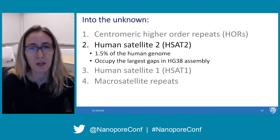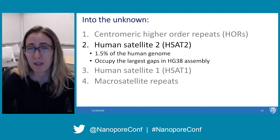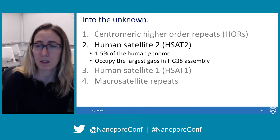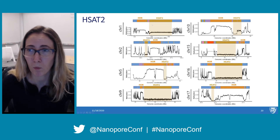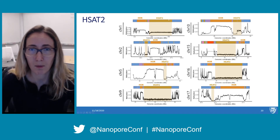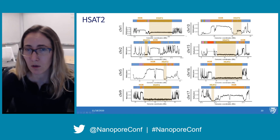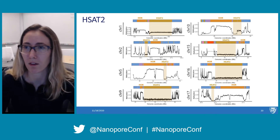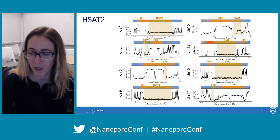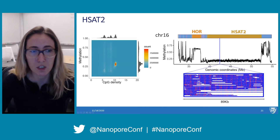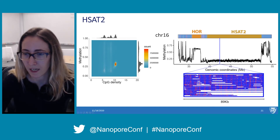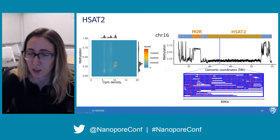Next, we looked into human satellite 2 (HSAT2). These make up 1.5% of the human genome and occupy some of the largest gaps in HG38, so probing epigenetics in these regions has never been done before. We see large HSAT2 arrays on chromosomes 1, 2, 5, 9, 10, 15, 16, and 17. The HSAT2 arrays are largely hypomethylated on every chromosome, which is really interesting because we typically associate repetitive DNA with repression and hypermethylation. They also exhibit a periodicity or frequency within the methylation state, are very CG-dense, and are largely unmethylated.